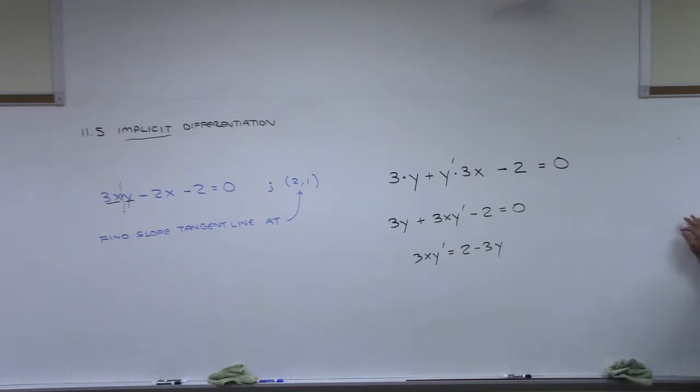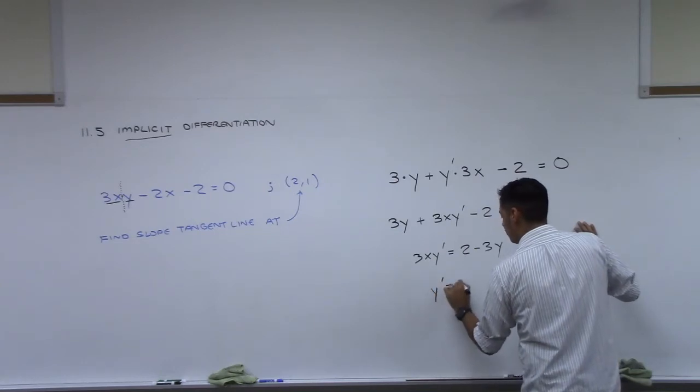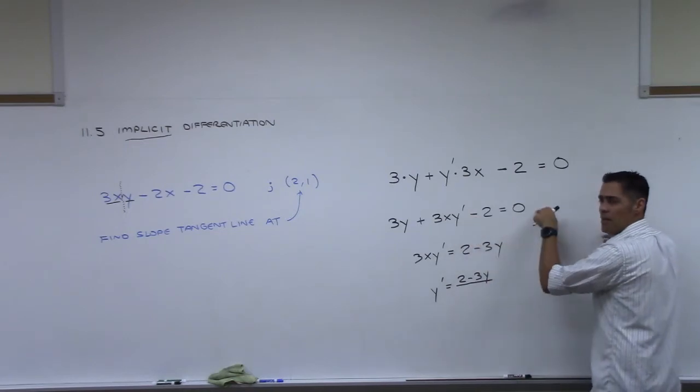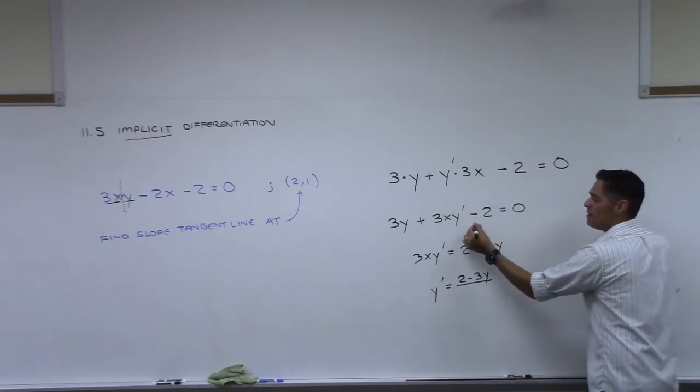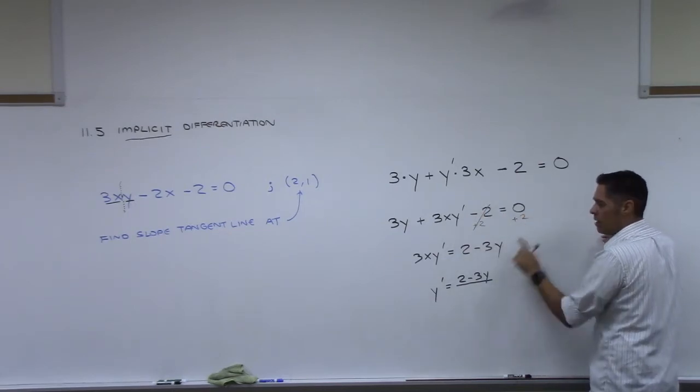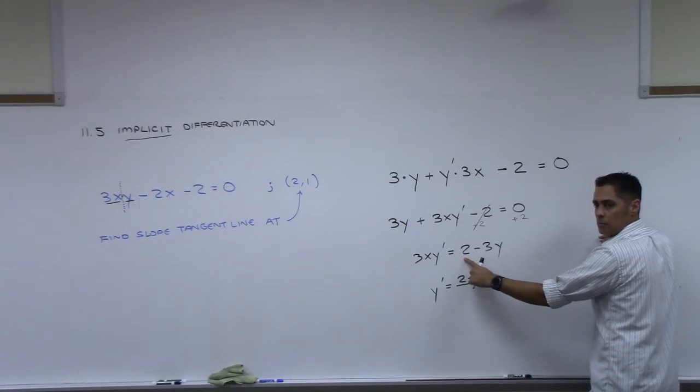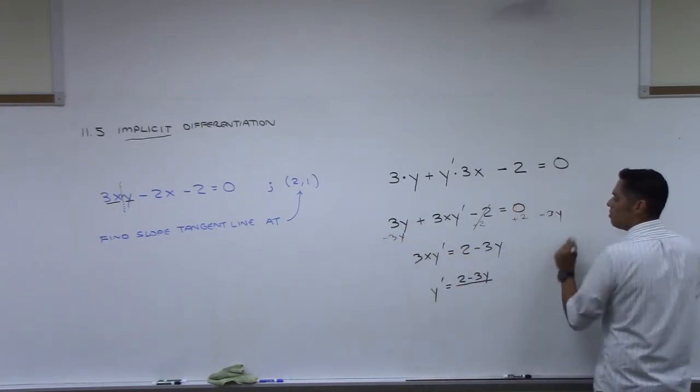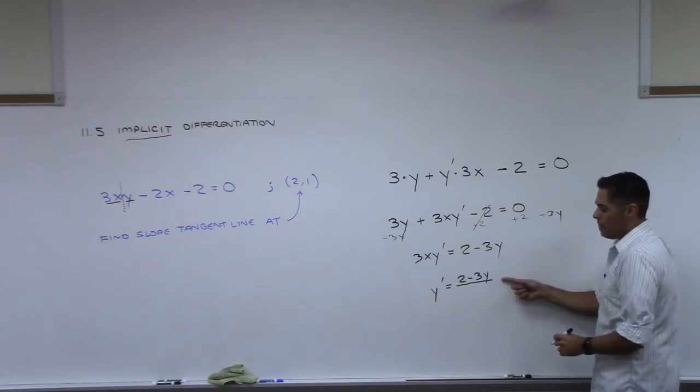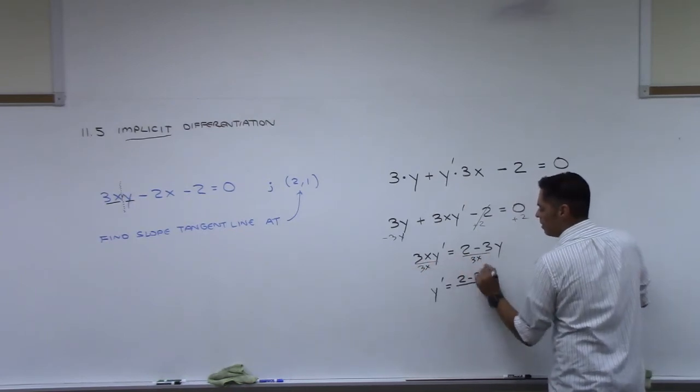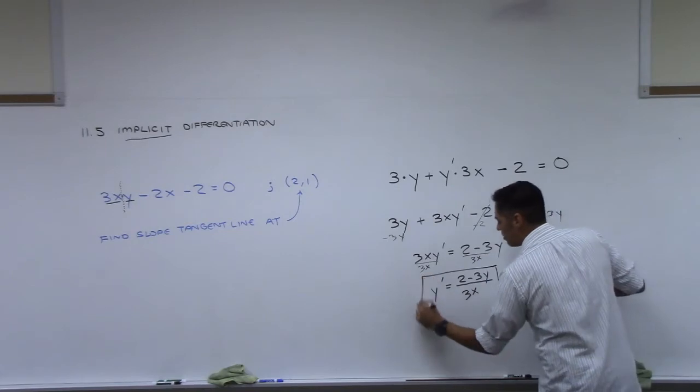Let's get y prime by itself. So how about we move this over? And move this over. Subtract it. So we would have 3xy prime equals 2 minus 3y. And finally, to get y prime by itself? Divide both sides by 3x. Why isn't it negative? It was negative, and we moved it to the other side, which made it positive. Because technically, we're adding 2. We add 2 over here, it goes away. We add 2 to 0, we get 2. And then over here, it's the opposite. We're subtracting 3y, so it becomes minus on this side. Then we're dividing by 3x, dividing by 3x, so this is it right here. That's our derivative.